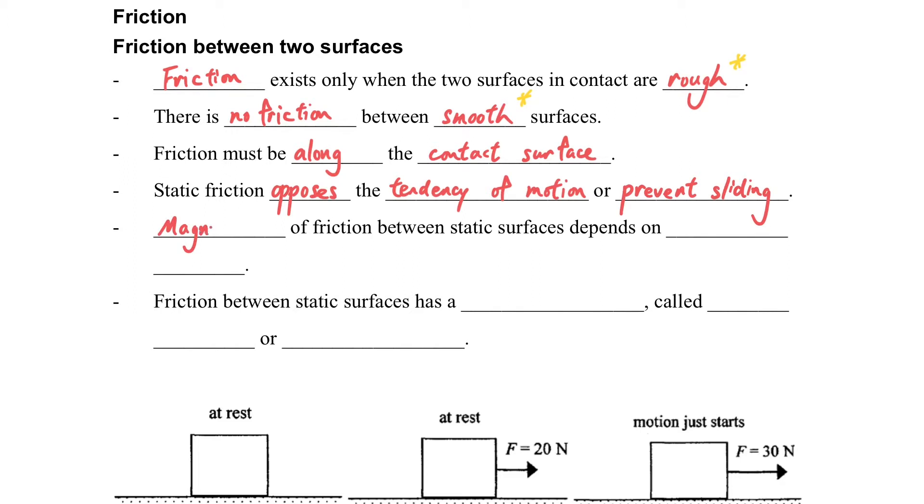The other characteristic of friction is the magnitude of friction between two static surfaces depends on the tendency of motion. That means it may not be a constant. Friction between two static surfaces has a maximum value, usually we call it the maximum friction or the limiting friction.